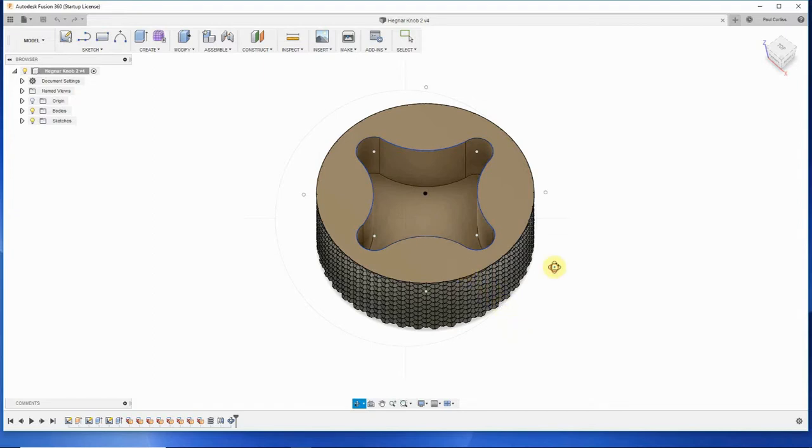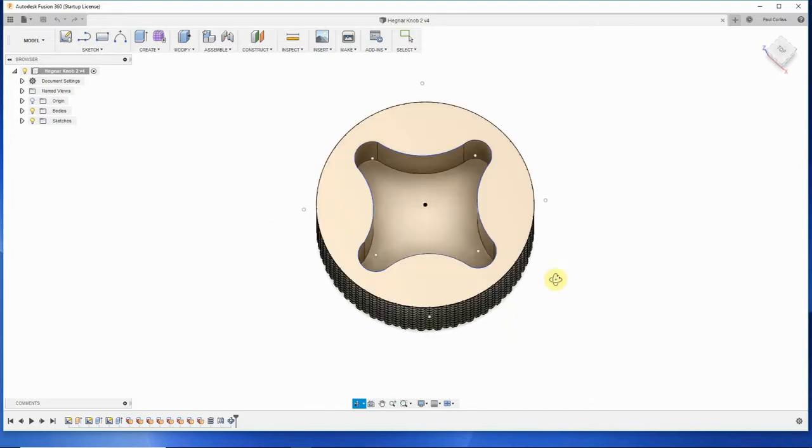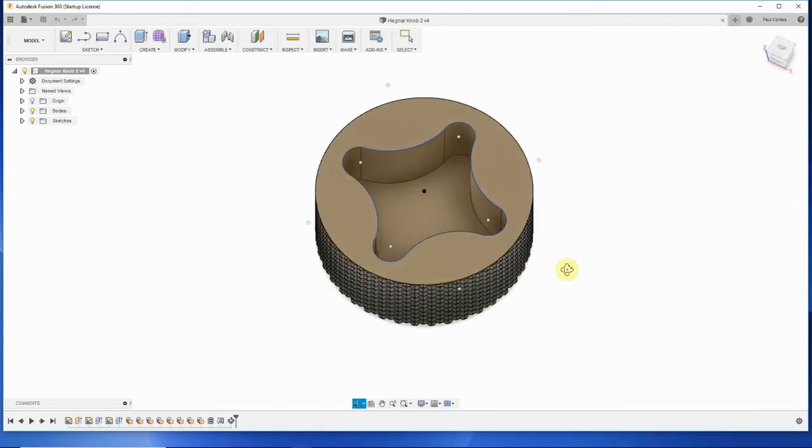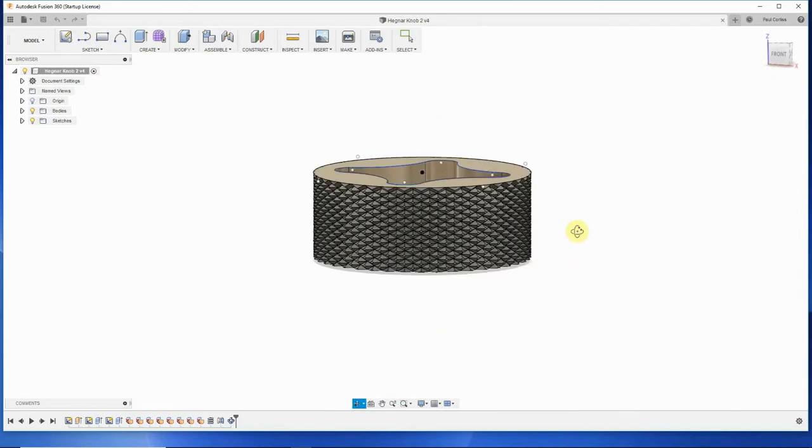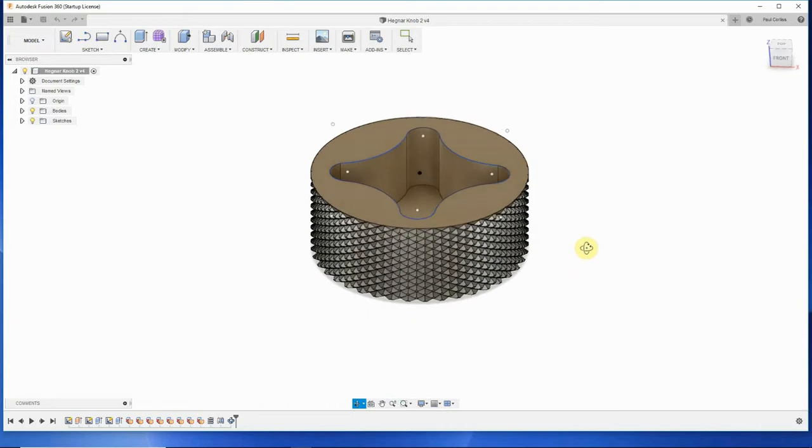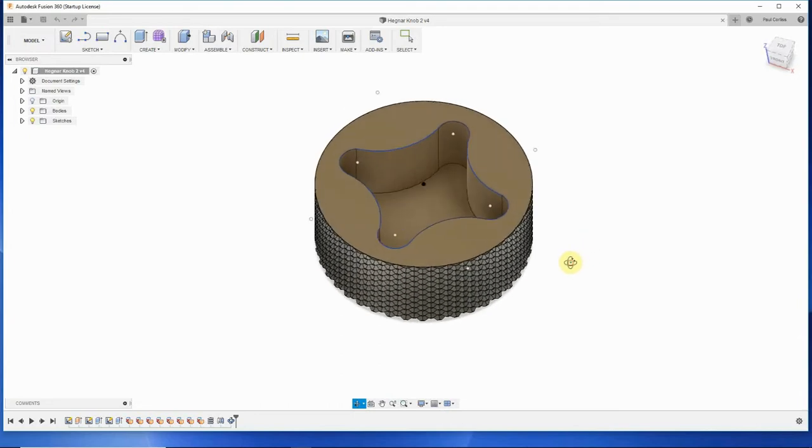But what I ended up with is just a cylinder, a solid cylinder, and I made the recess for the knob and I put some knurling on the outside. And once I got that all done and I was happy with it, I saved the file and then I opened it in Cura and I'll show you what I did over there.